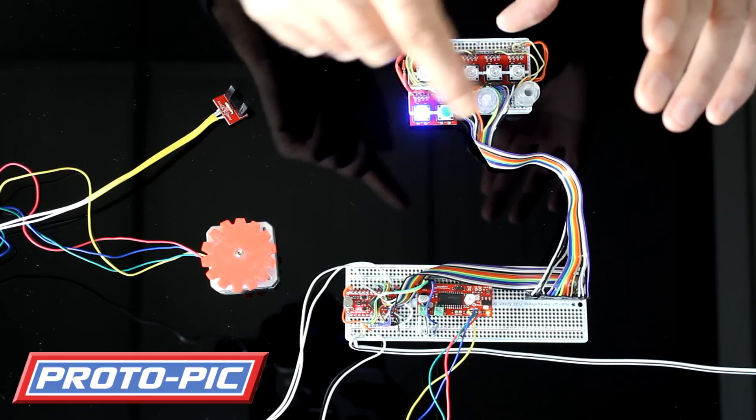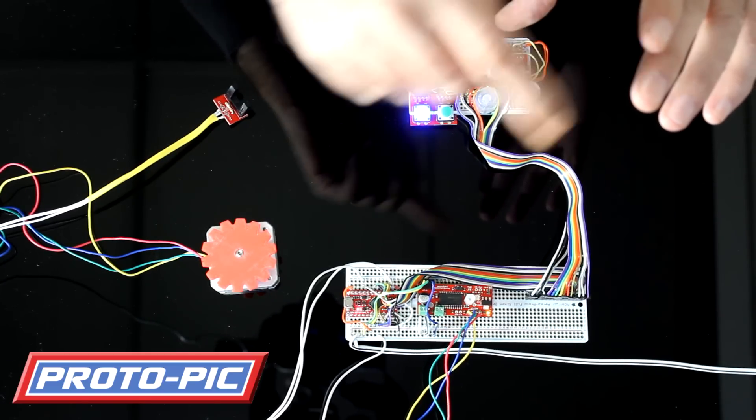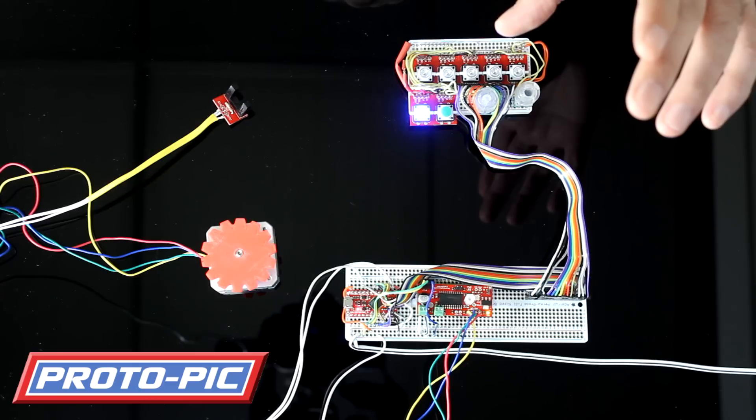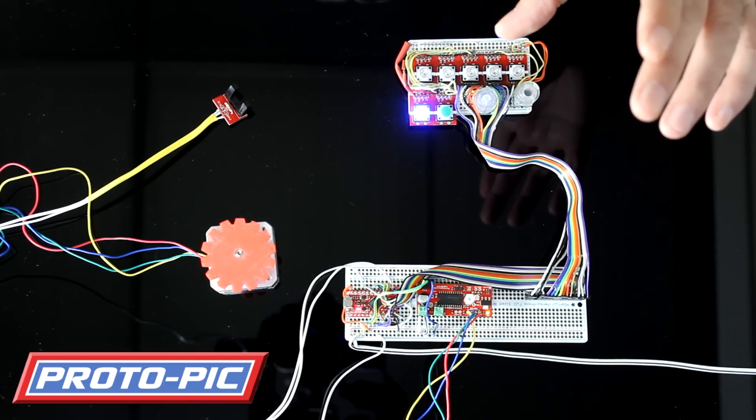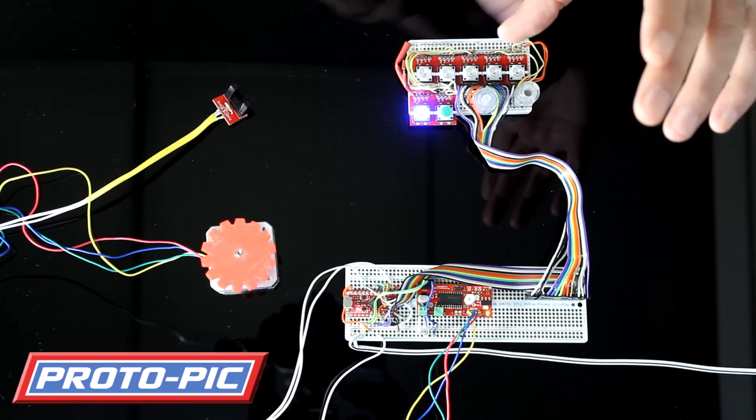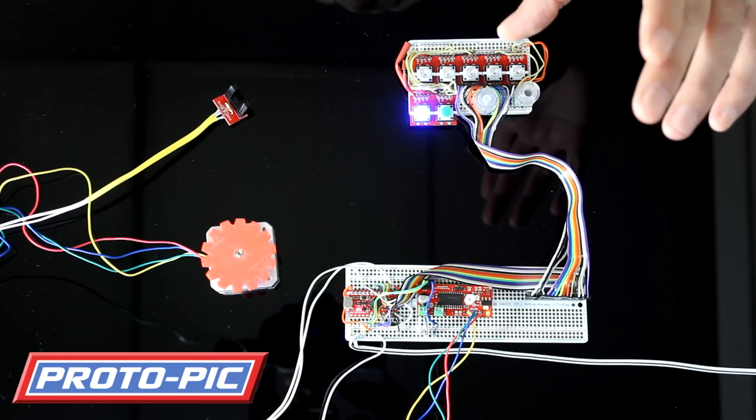So when you press the button it's like a voltage divider you'll get a different number coming into the analog value and I think we had around about 150 counts per button so it was plenty to differentiate between each button press.